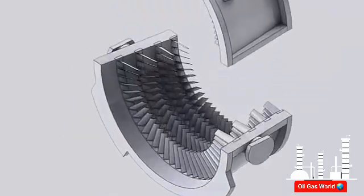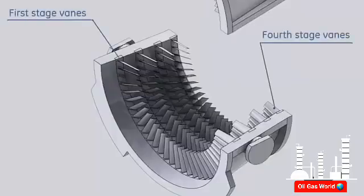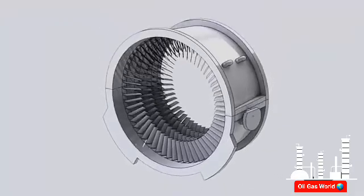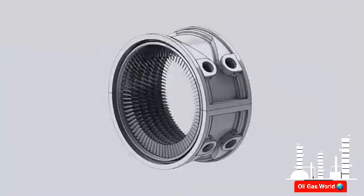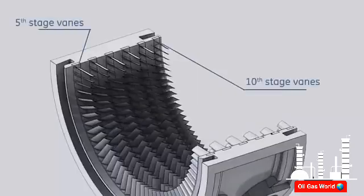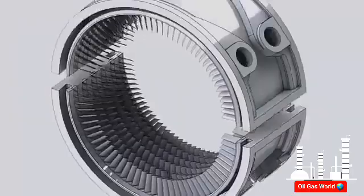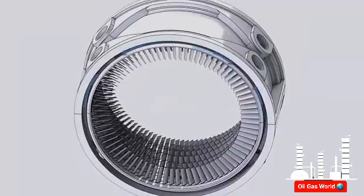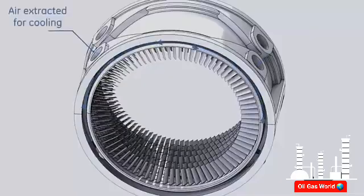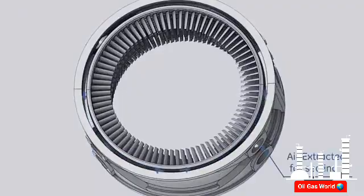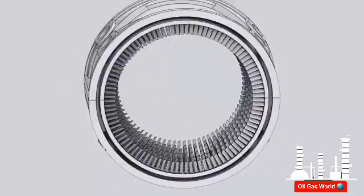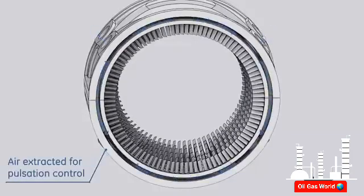The forward casing contains the first four compressor stator vanes. The lower half is equipped with two trunnions, used with other trunnions on the turbine shell to lift the gas turbine to or off the turbine base. It also features a mounting point for the forward turbine support plate. The aft casing contains the fifth to the tenth compressor stator vanes. A groove machined at the forward face around the fifth wheel blades allows air extraction for cooling and sealing through two ports in the upper half and two on the lower half. Another groove is machined around the eleventh wheel blades, where air is extracted for surge protection during transient operation.